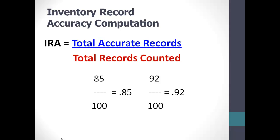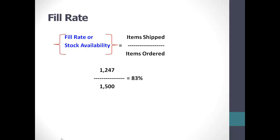It's very important that you don't confuse your fill rate with your inventory record accuracy. Your IRA is a reflection of how well your shelf count and record count match — do your stock records accurately reflect what is actually in the stock room? Fill rate, also called stock availability, is a reflection of how effective your inventory is. In other words, did you have what you needed when you needed it? The fill rate looks at the qualitative nature of your inventory efforts.